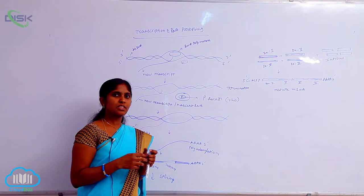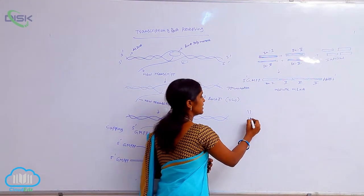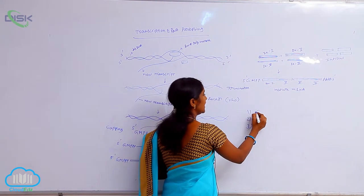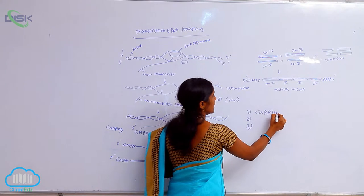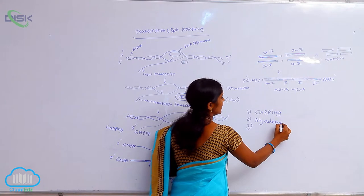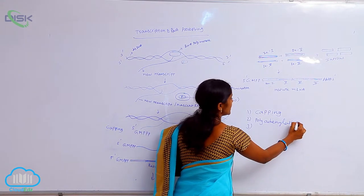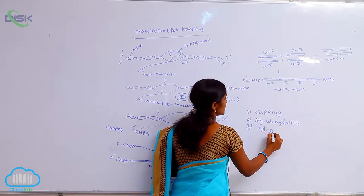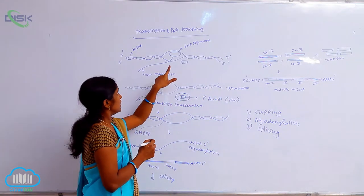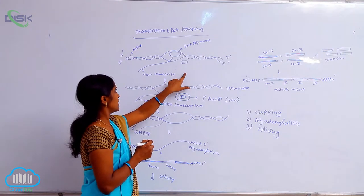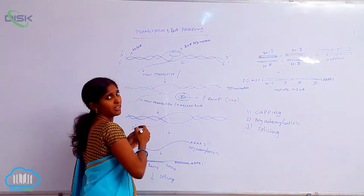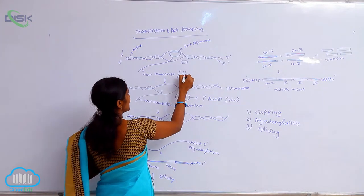In RNA processing, three major steps occur. The first step after formation of mRNA is capping. The next step is polyadenylation, and then splicing. These three major steps are involved in RNA processing. After transcription, the new transcript formed is called nascent RNA, also called hnRNA — heterogeneous nuclear RNA.